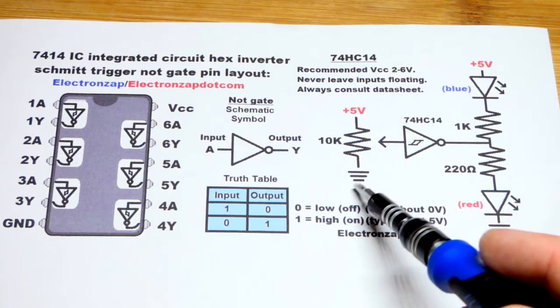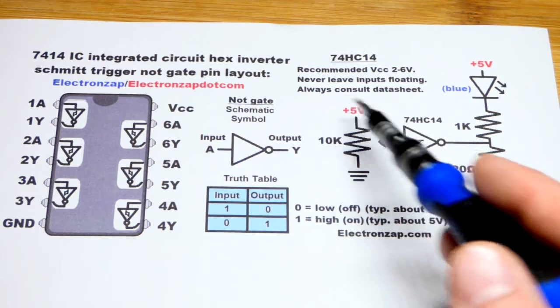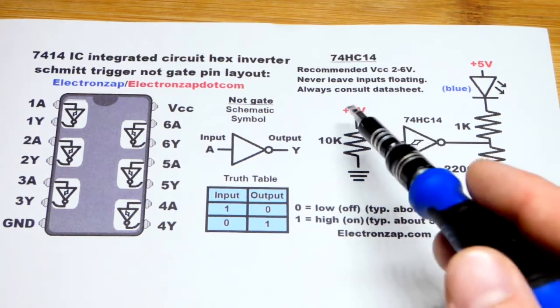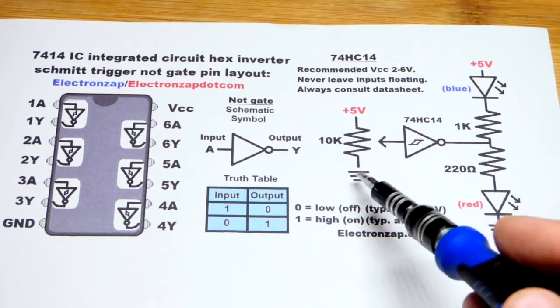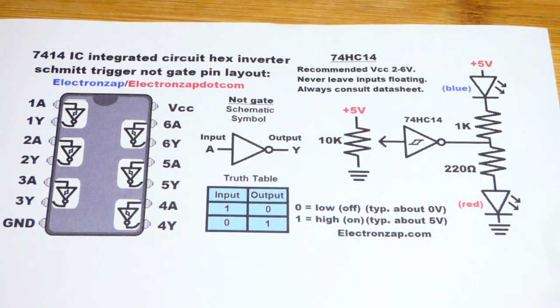When we have a low input we will have a high output, basically five volts. It won't get quite all the way to five volts, but it should get pretty close to zero volts.